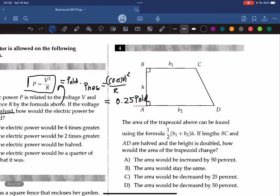Alright, so the area of the trapezoid above can be found by using the formula here. If the lengths BC and AD are halved and the height is doubled, how would the area of the trapezoid change?